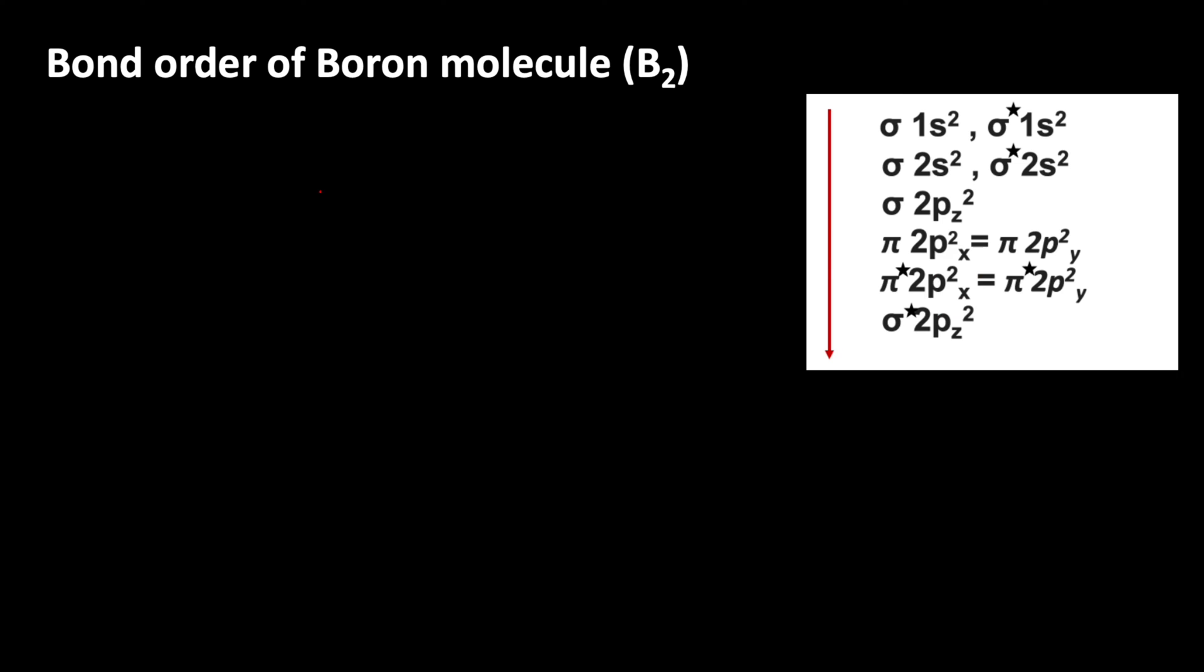Boron molecule is formed by the combination of two boron atoms. Boron atomic number 5. So, we can write the electronic configuration 1s2, 2s2, 2p1.